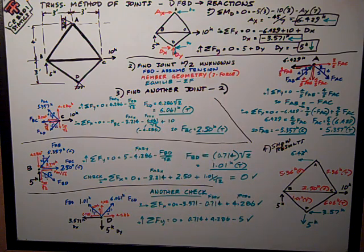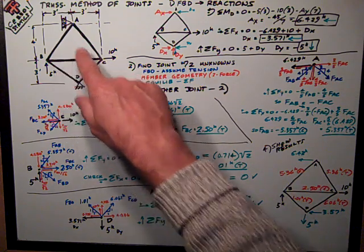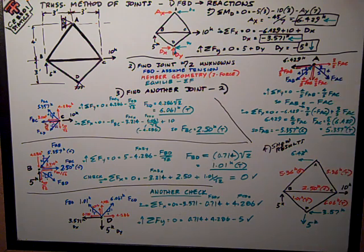Then do the equilibrium equations, and all I've got is sum of forces. So I first go to joint A. It has two unknowns, the forces in AB and AC. Here I've drawn my free body diagram.